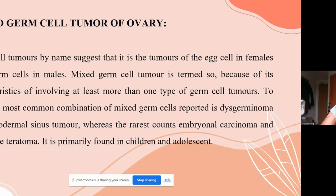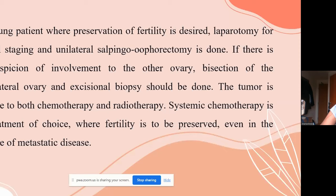The rarest combination is embryonal carcinoma and immature teratoma. The condition is primarily found in children and adults. In young patients where preservation of fertility is desired, laparotomy for surgical staging and unilateral salpingo-oophorectomy is done. If there is any suspicion of involvement of the other ovary, bisection of the contralateral ovary and excisional biopsy should be performed. The tumor is sensitive to both chemotherapy and radiotherapy, making it difficult to preserve fertility. Systemic chemotherapy is the treatment of choice where fertility is to be preserved, even in metastatic disease.